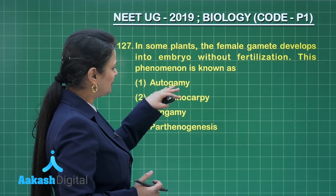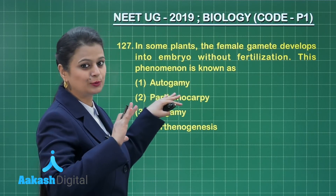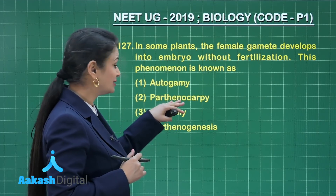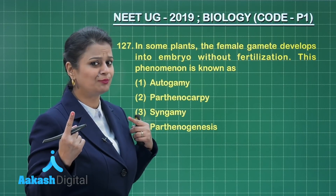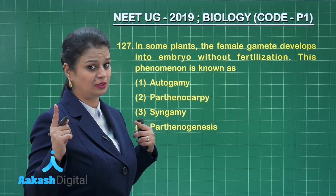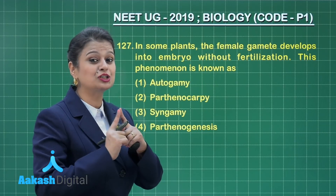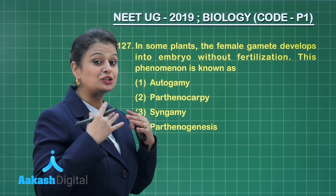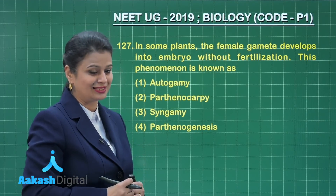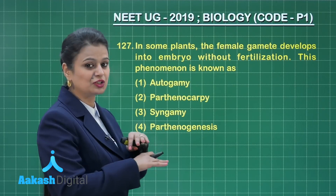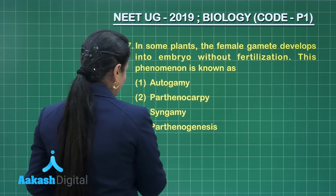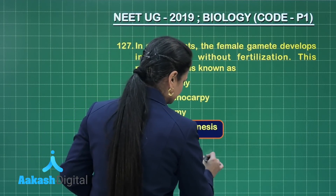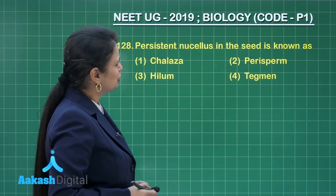Looking at the options: autogamy is self-pollination, not related to fertilization or parthenogenesis. Don't confuse parthenocarpy and parthenogenesis — parthenocarpy is formation of fruit without fertilization, while parthenogenesis is formation of embryo without fertilization. Syngamy is fertilization, which is not occurring here. So the right answer is option number four.